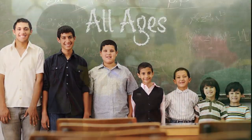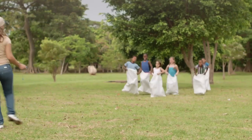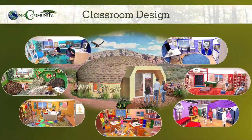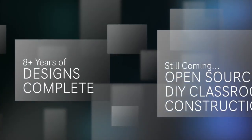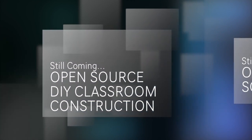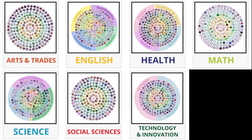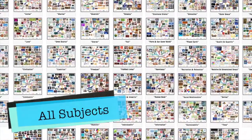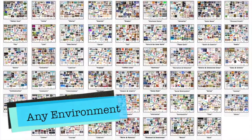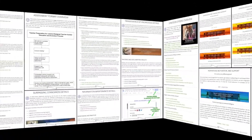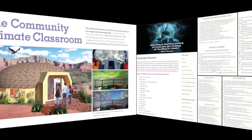One Community's approach to highest good education is designed for all age groups, adaptable to any schooling environment, inspiring and fun, and includes national standards, all subjects, lesson plans, teaching strategies, learning strategies and tools, classroom design and more. With eight years invested, this component is nearly complete. Completed sections include comprehensive subject outlines covering arts, trades, English, health, math, science, social sciences, technology and innovation, and values; 52 weekly theme lesson plans; 12 detailed progressive curriculum outlines; summaries of best known alternative education programs including Montessori, Waldorf, Orff, and Reggio; and leadership skills, collaborative assessment formats, and a global online free education resource hub.